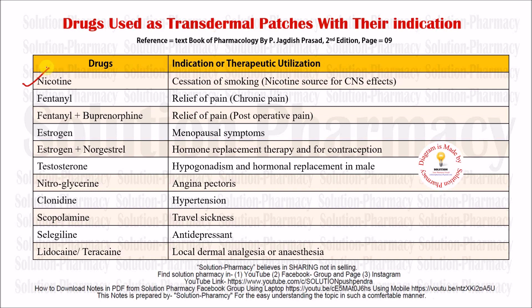The first drug is nicotine. Nicotine is basically a central nervous system stimulant, but if a particular person wants to stop smoking, he or she should use nicotine transdermal patches — they are used for cessation of smoking. The next drug is fentanyl, used for the relief of pain, specifically chronic pain. The combination of fentanyl plus buprenorphine is used for the relief of post-operative pain — that is, pain after an operation.